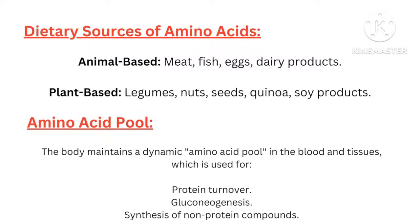Dietary sources of amino acids. Animal-based sources include meat, fish, eggs, and dairy products. Plant-based sources include legumes, nuts, seeds, and quinoa. Soy products are also a significant source.